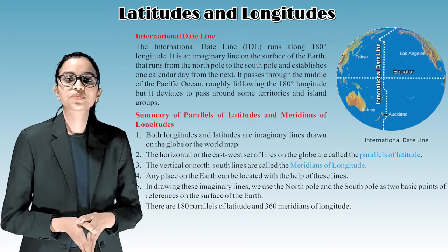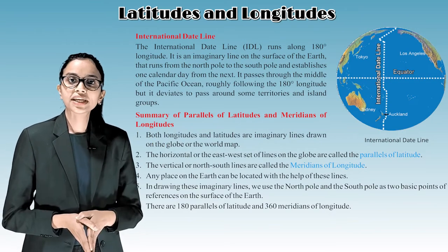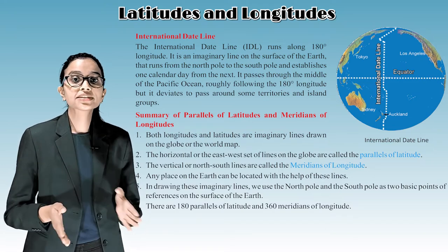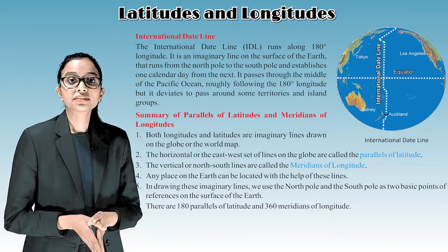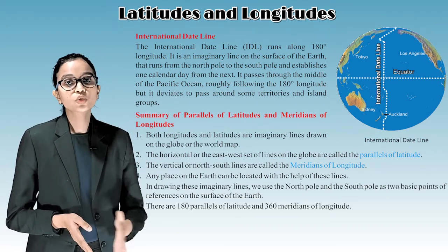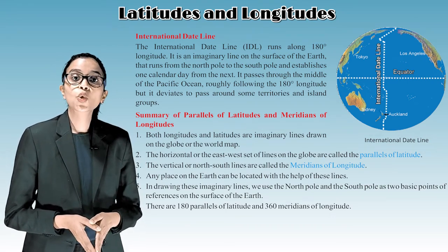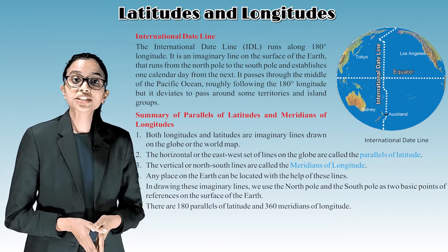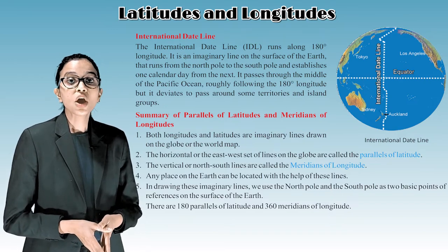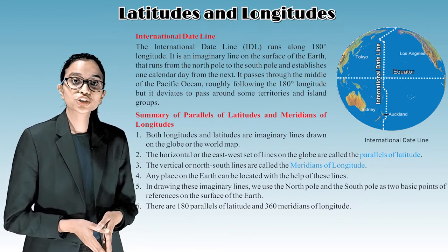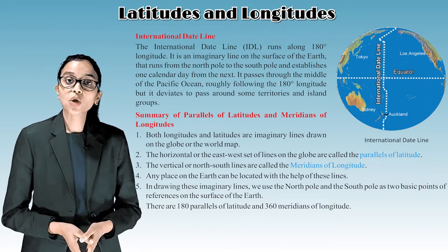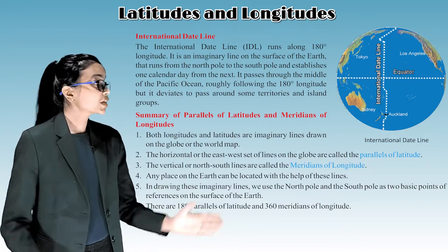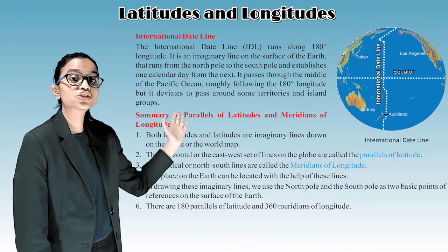International Date Line: The International Date Line, or IDL, runs along the 180 degree longitude. It is an imaginary line on the surface of the earth that runs from the North Pole to the South Pole and establishes one calendar day from the next. It passes through the middle of the Pacific Ocean, roughly following the 180 degree longitude, but deviates to pass around some territories and island groups. You can see the picture of the international date line on screen.